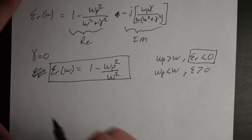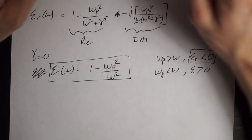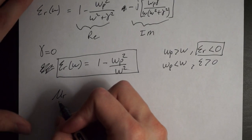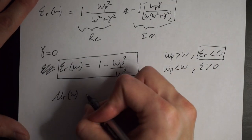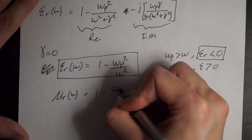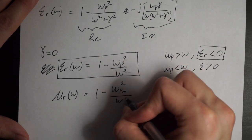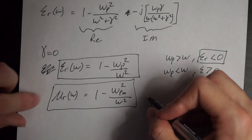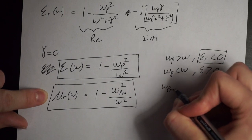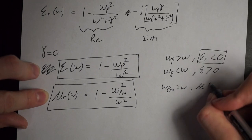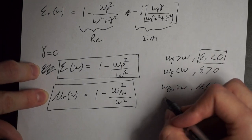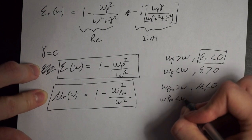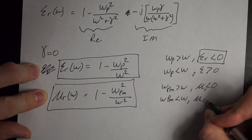Because there's no such thing as a magnetic charge or magnetic dipole, we make an assumption that we can set μᵣ as a function of ω equal to 1 − ωₚₘ²/ω², where ωₚₘ is the magnetic plasma frequency. In this case we get the same behavior: if ωₚₘ > ω, then permeability is less than zero; and if ωₚₘ < ω, then permeability is greater than zero.